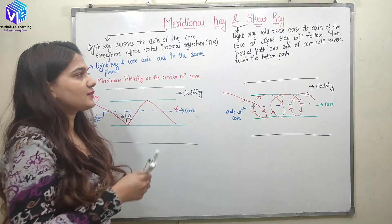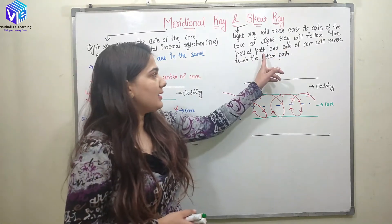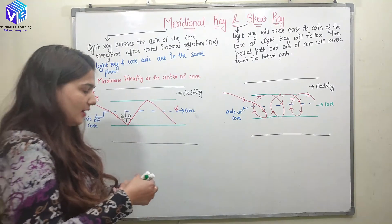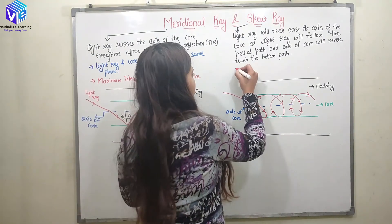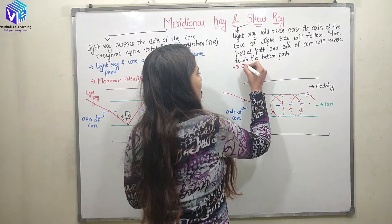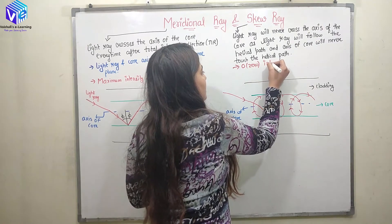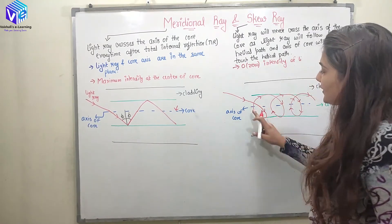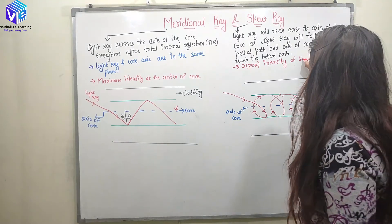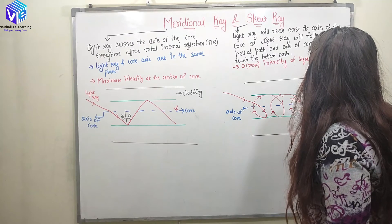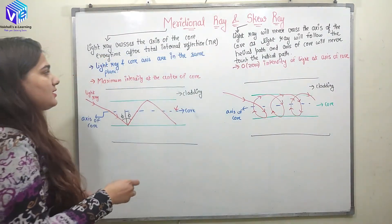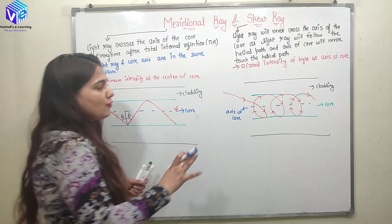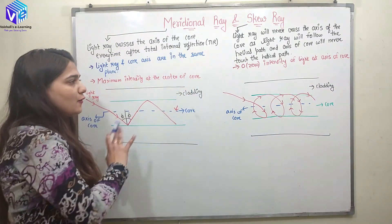The light ray will never cross the axis of the core, as the light ray follows a helical path and the axis of the core will never touch this helical path. At the axis of the core, we will be having zero intensity of light — this is obvious because the light is not reaching the axis of the core, so we will have zero intensity there. The light intensity and the axis of the core are never in the same plane.